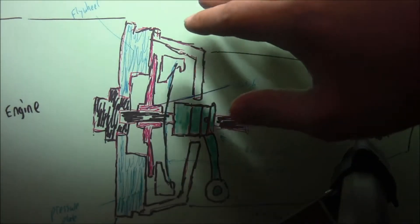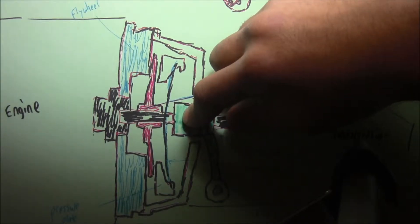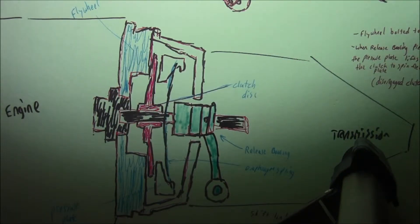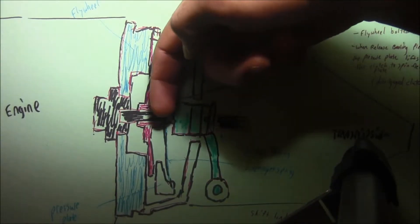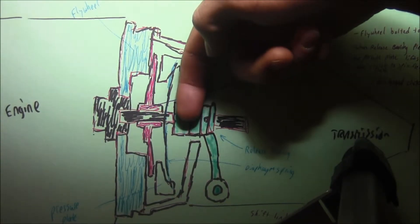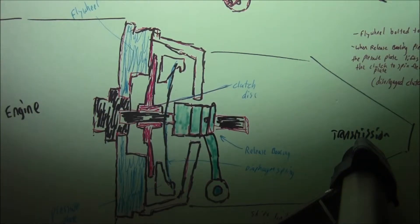The pressure plate lifts which allows the clutch to spin freely. This is called disengaging the clutch.